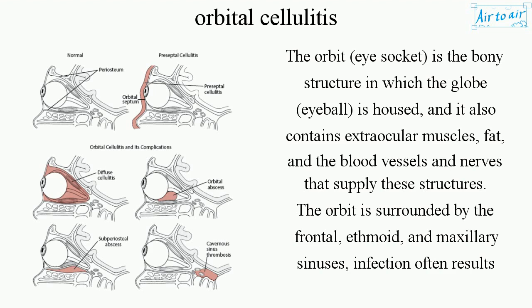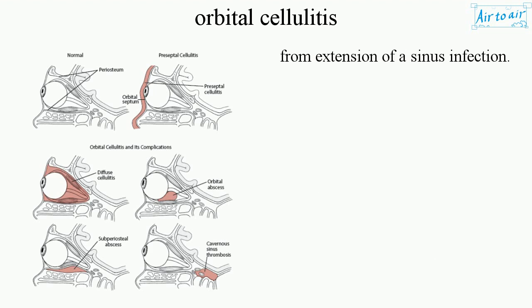The orbit is surrounded by the frontal, ethmoid, and maxillary sinuses. Infection often results from extension of a sinus infection.